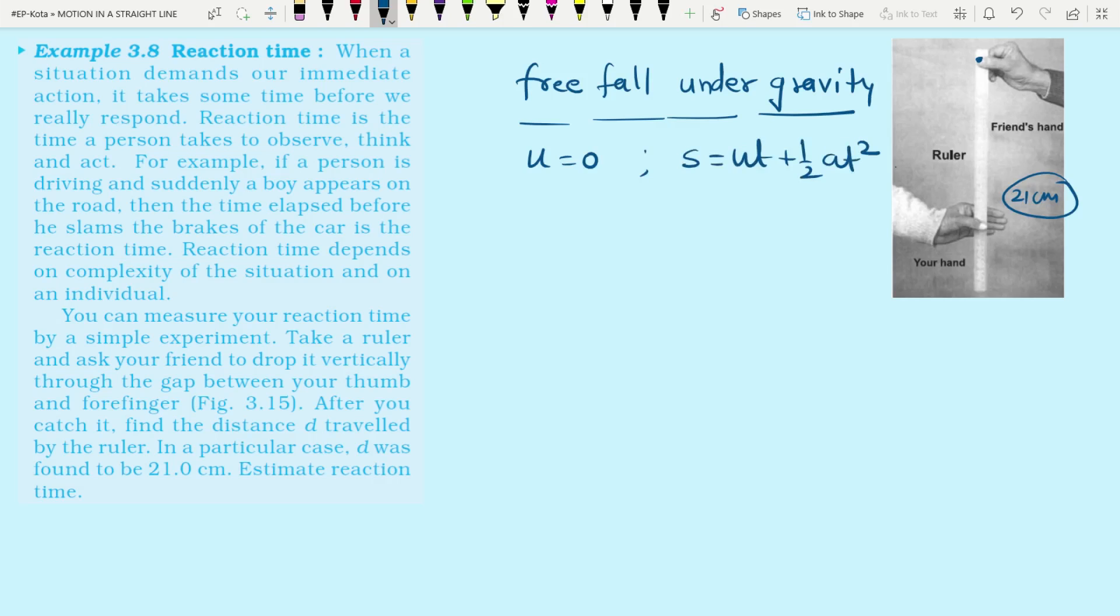half at squared. In this case, the u term is 0, so s is equal to half at squared. Here we have a length that is 21 cm, so s value is 21. So we write 21 into 10 to power minus 2 meters.